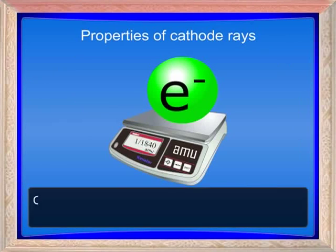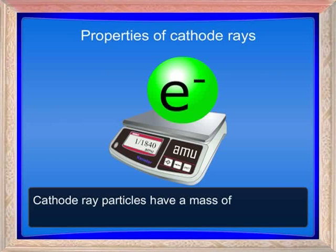Nine, cathode ray particles have a mass of 1/1840 times the mass of a hydrogen atom.